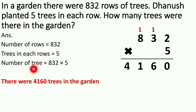Number of trees, total number of trees in the garden is 832 multiply by 5. 832 multiply by 5. So how to do this? Look here. Write like this.